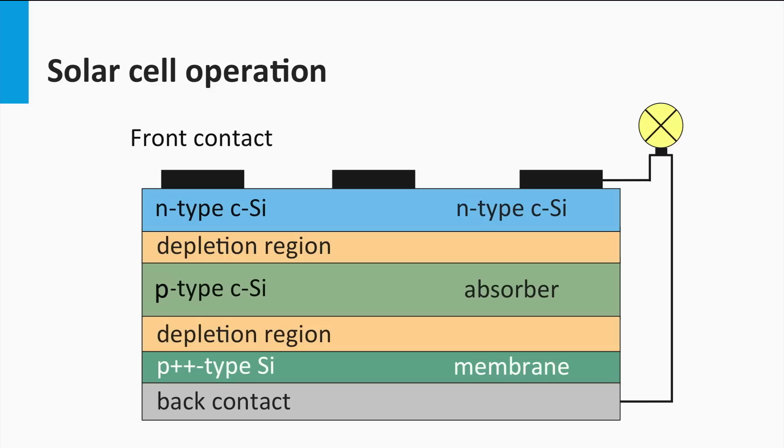It shows that the photovoltaic process is based on three important principles. The first is excitation of free mobile charge carriers due to light absorption. The second is separation of the charge carriers. And the third one is collection of the charge carriers at the contacts.